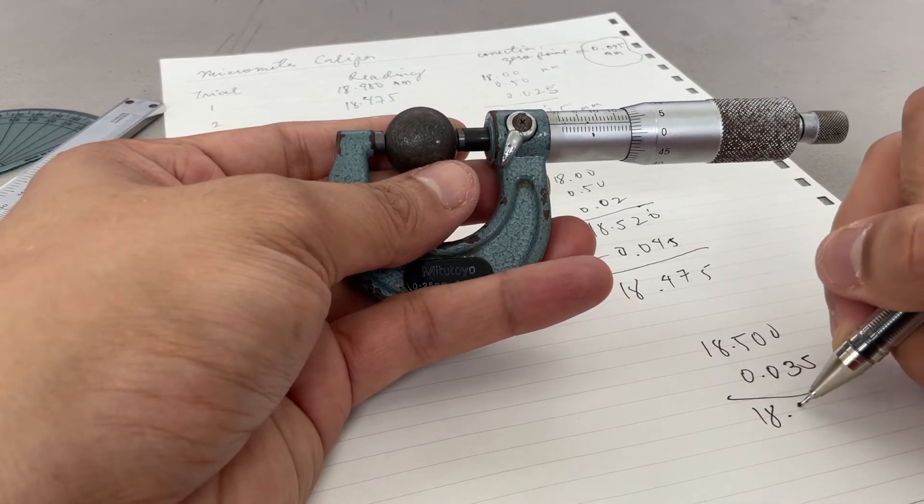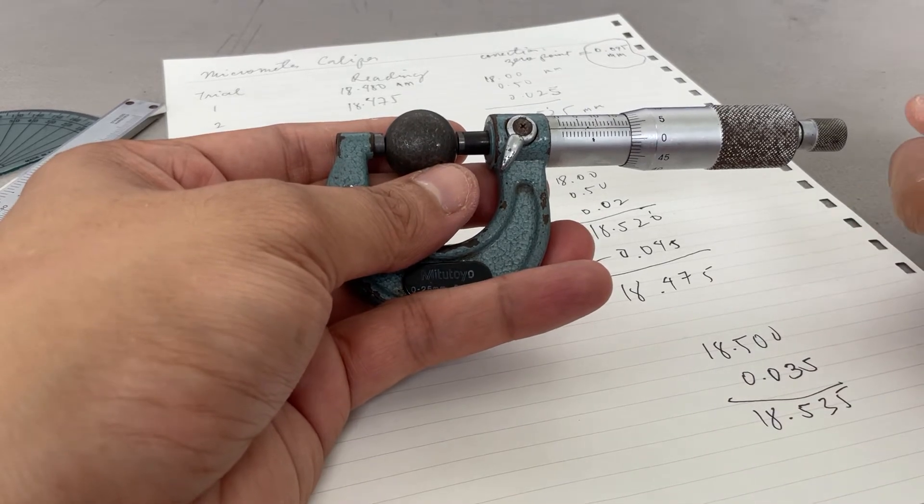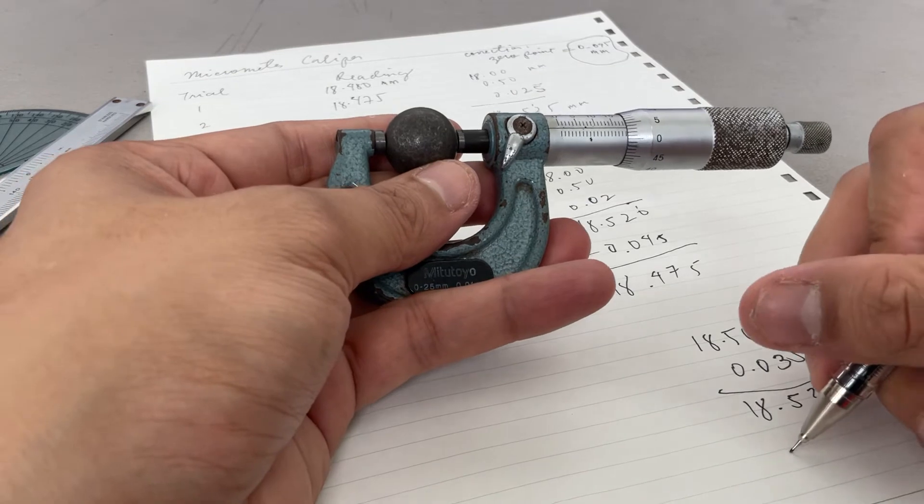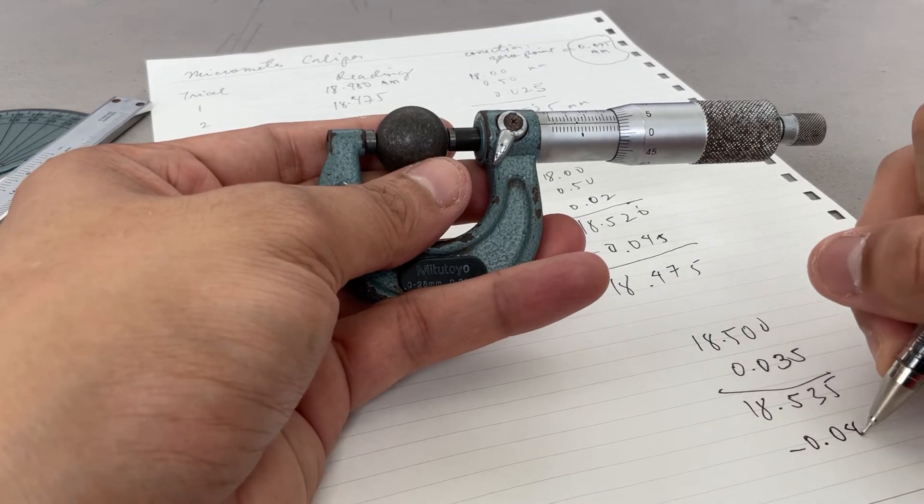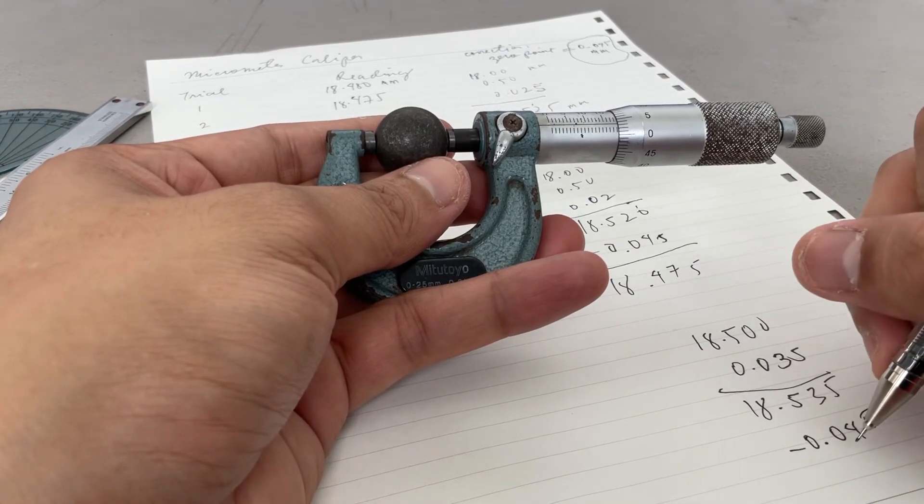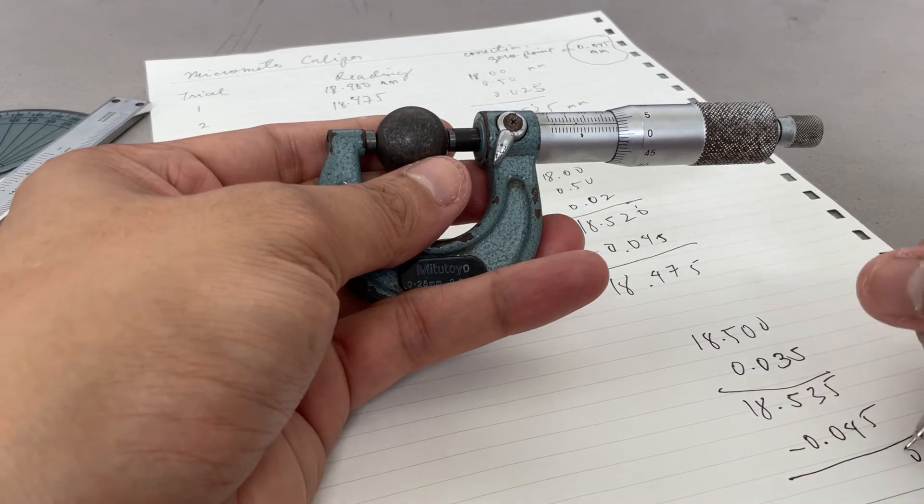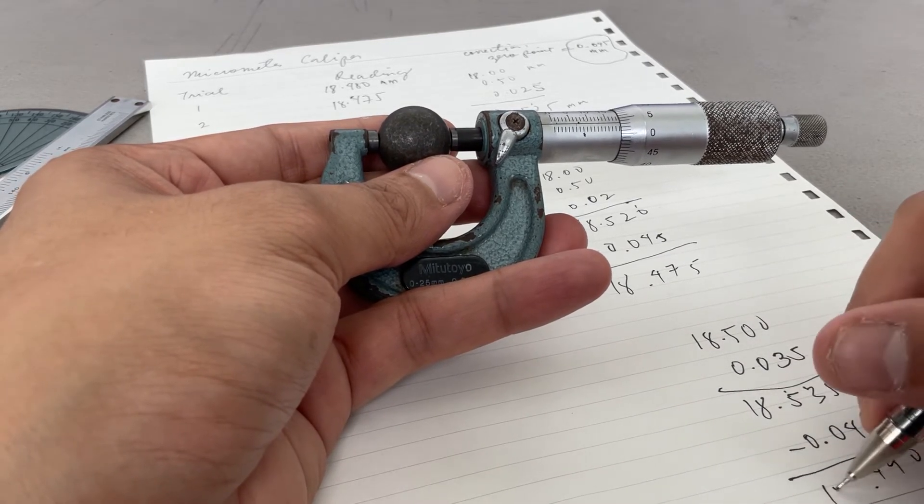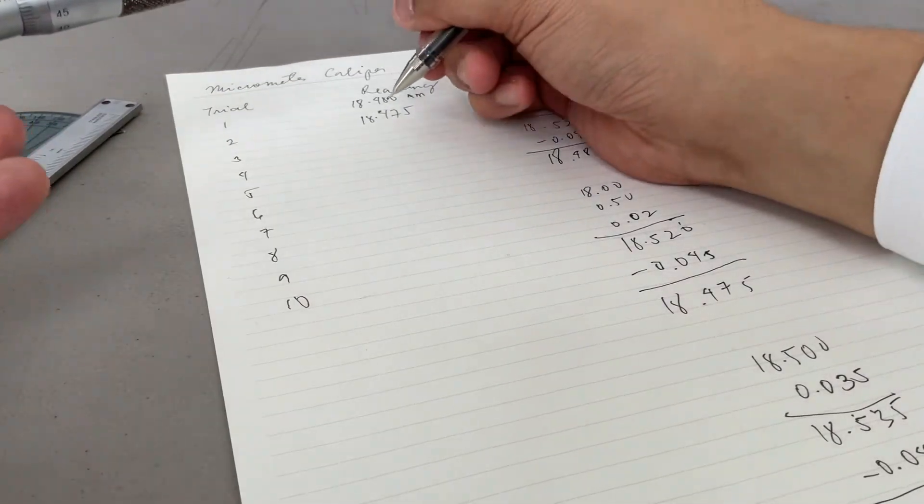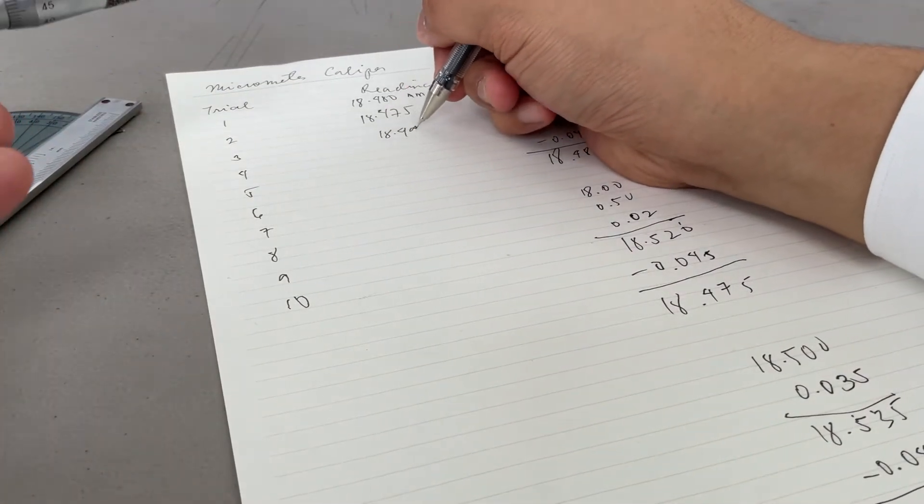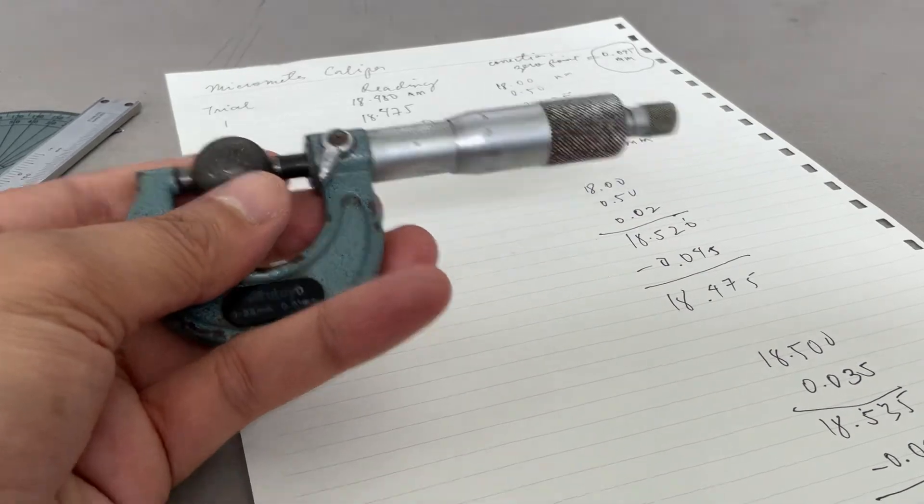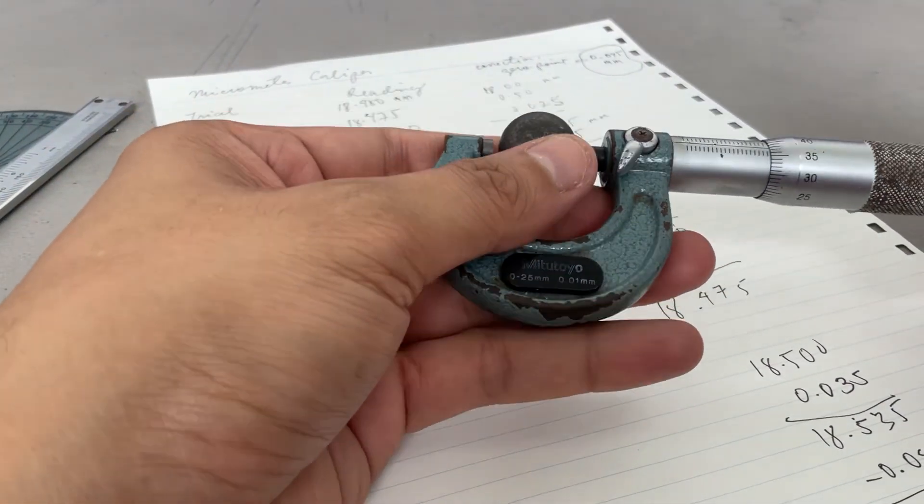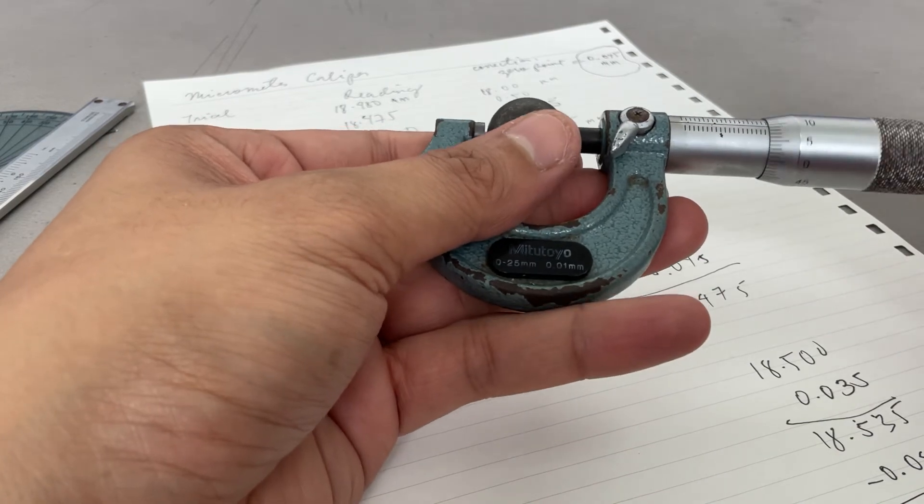So 18.535. And then you have the zero correction which is 0.045, so you have to deduct it. 18.490. We have a lot more trials to do, so I think we should pause the video.